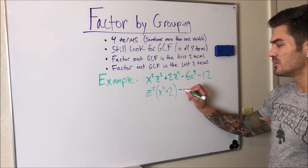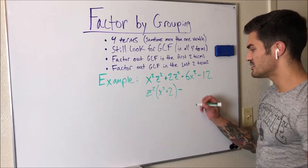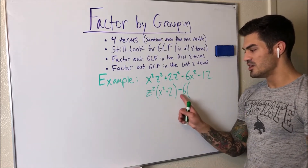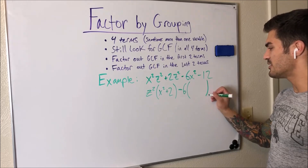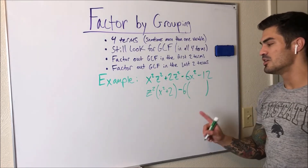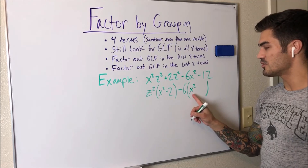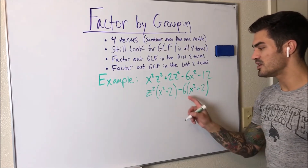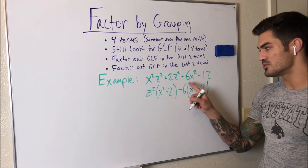Now for the last two terms, we need to be careful with the negative signs. Both share a six, but because there's a negative sign in front, what we're really factoring out is negative six. What's left inside is X squared, giving us negative 6X squared, and this is where a lot of students make mistakes: the remaining term has to be plus two, not minus two. When you FOIL it back out — distributing that negative six — you get negative 6X squared minus twelve, which gets us back to where we were. So just be really careful with the negative signs.